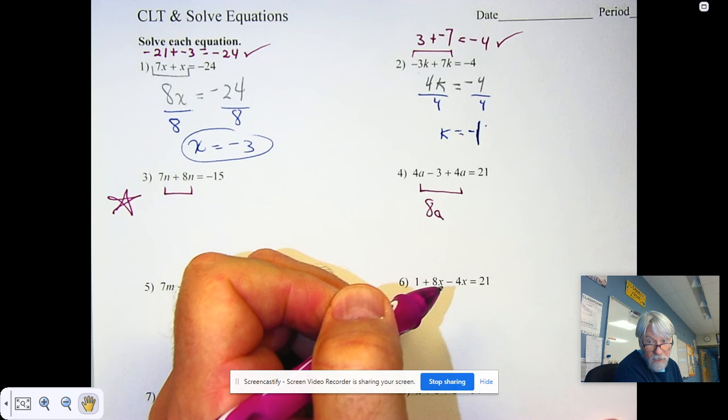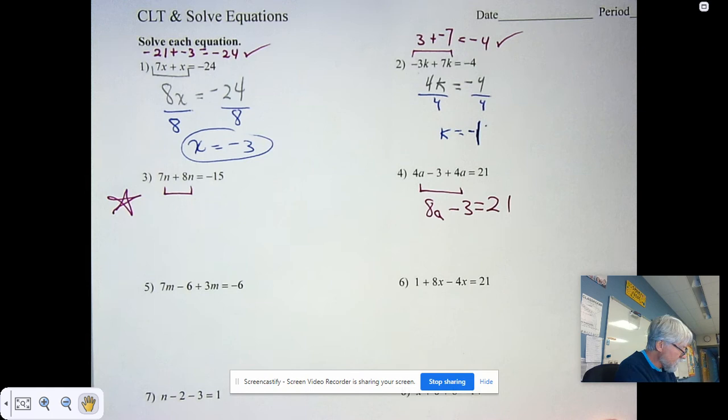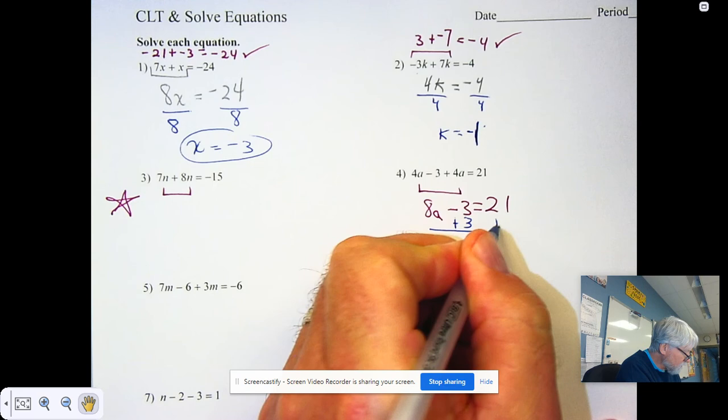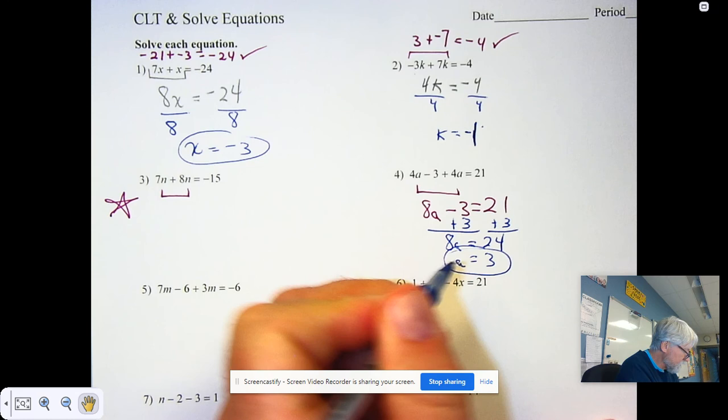4a plus 4a, that's going to be 8a. Minus 3 is a constant term, so I cannot combine that. Now I've simplified as much as I can with the variables. If I add 3 to both sides, I get the 8a being 24. And when I divide by 8, I get an a of 3.